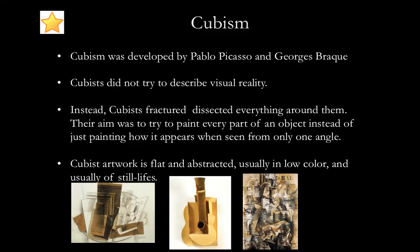Let's look at some Cubism. Cubism is a style of artwork developed by Pablo Picasso and Georges Braque, though who exactly developed it is subject to much debate. Cubists were not trying to describe visual reality or make things look like a photo. Instead, they wanted to fracture and dissect everything around them, painting every part of an object rather than just how it appears from one angle. Cubist artwork is flat and abstracted, usually low in color, and typically depicts still lifes because still lifes don't move — though some cubist works do take on the human form.